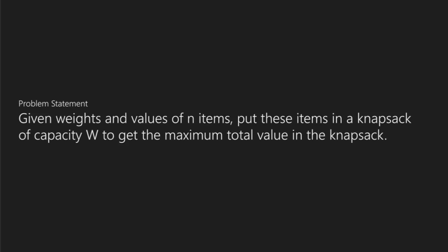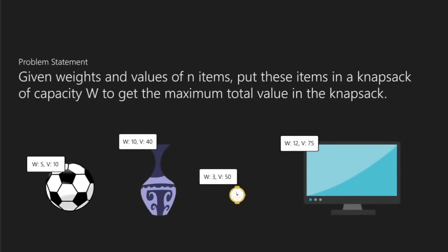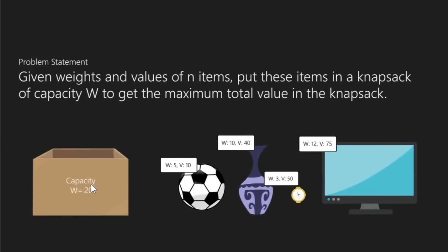We have four items: a football, a vase, a watch, and a monitor. Each one has a weight and a value assigned to it. The knapsack has a limited capacity of 20 units, which means it can hold 20 units of weight only. The question asks us to choose from these four items to fill the knapsack to grab the maximum value out of it.